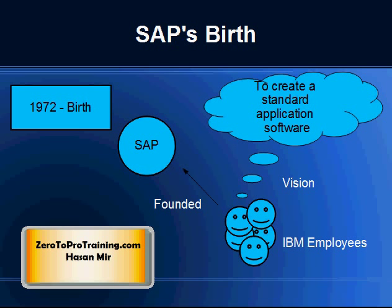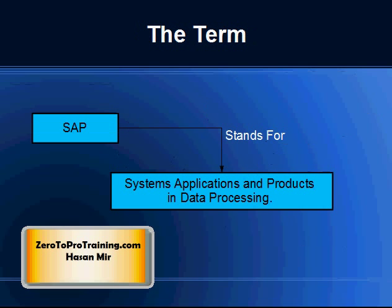SAP was started in 1972. The founders were five former IBM employees. The vision was to create a standard application software for real-time business processing. SAP stands for Systems, Applications, and Products in Data Processing.